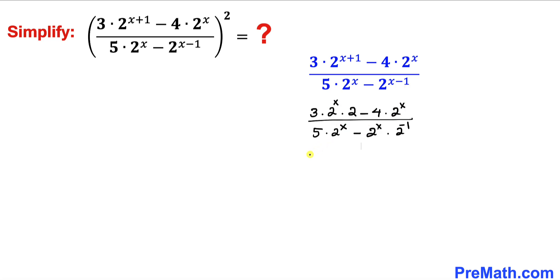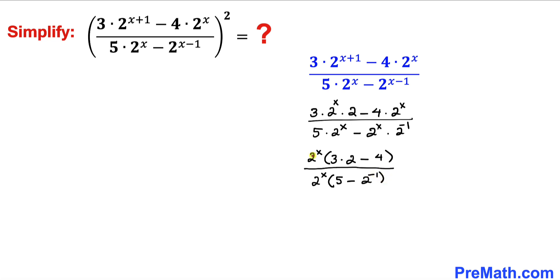So I can factor out 2 power x. In the numerator we are left with 3 times 2 minus 4, and in the denominator we are left with 2 power x times 5 minus 2 power negative 1. Now we can see this 2 power x and 2 power x cancel, so we are left with the simplified expression.